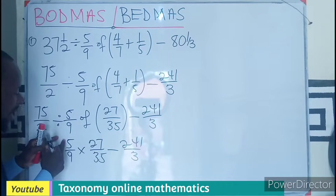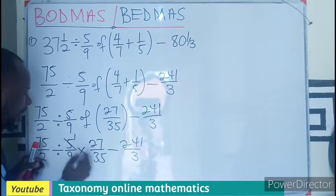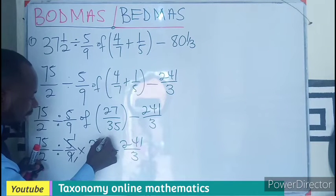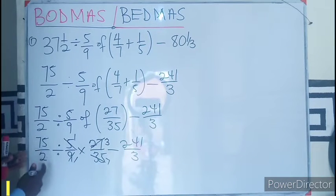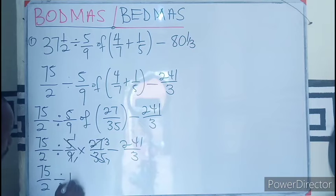So this is division, this is also division. You can see there's a common factor for 9 and 27, there's a common factor for 5 and 35. So I can divide. I'm not multiplying. So this will go here 1, go here 7, go here 1, go here. I think that will be 3. So this can be rewritten as 75 over 2 divided by 1 times 3 over 7 minus 241 over 3.